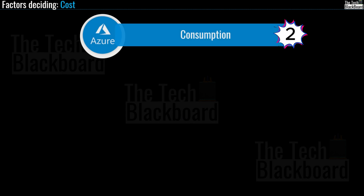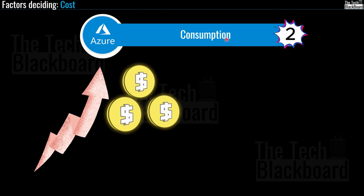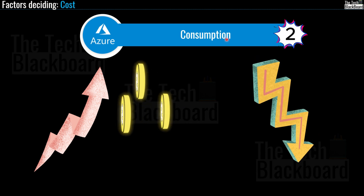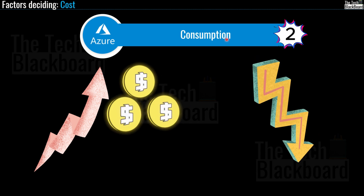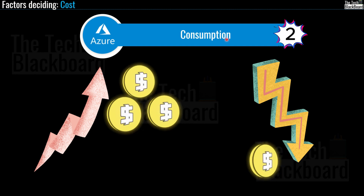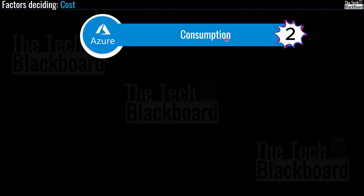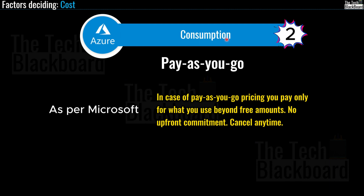Now let's understand the second most important factor: consumption. If you consume more computing resources in a particular billing cycle, your payments will be higher. Conversely, if your usage is lower in a billing cycle, your payments will be reduced. This billing mechanism is straightforward and provides the most flexibility. Pay-as-you-go is the most consistent cloud payment model, wherein you are billed for the specific resources you utilize during a billing cycle.